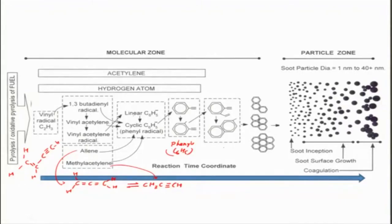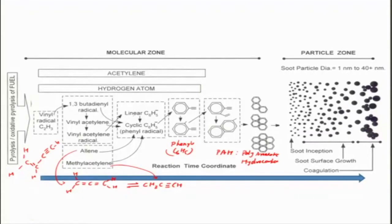The patch is being formed and joined together. These phenyl groups join together, building this patch of polyaromatic hydrocarbons. Once it is formed, you get the soot particles — that is the inception of soot particles. Everything up to this point is happening at the molecular level, and this region is known as the molecular zone.